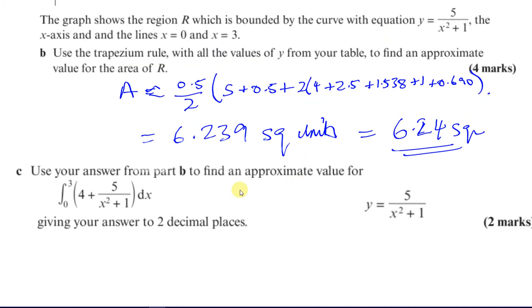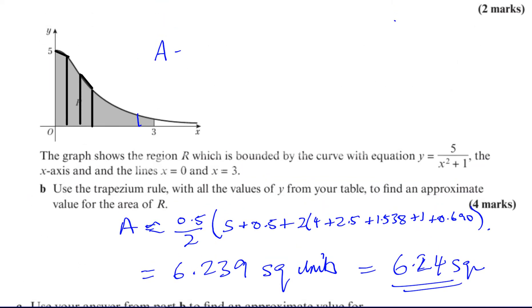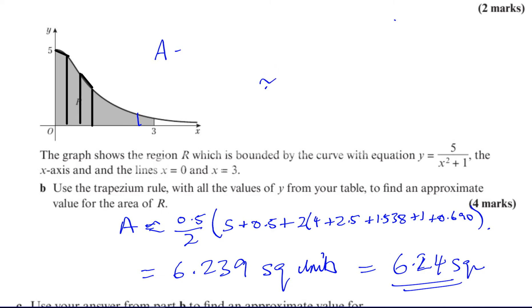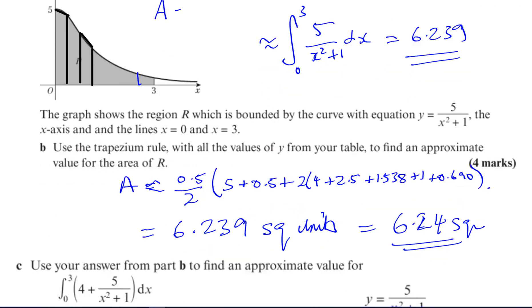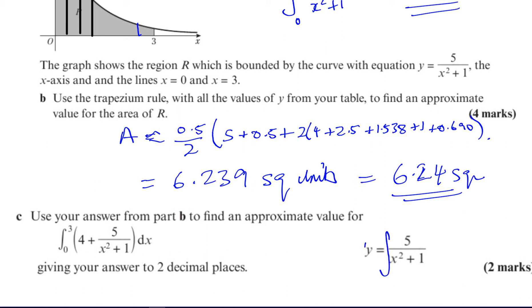Anyway, it says use your answer from part B to find an approximate value for the integral between 0 and 3 of 4 plus 5 over x squared plus 1 with respect to x. So now, see what we just did up here, we used this, we basically found an approximate value for the integral of 5 over x squared plus 1 with respect to x. We found an approximate value for this. The trapezium rule is basically giving us an approximate value for this between 0 and 3. So we found that that is 6.239. Okay, the more precise version of it. So we know what that approximate area for that is, but what we've been asked to do is to find, so what we know is, is that the area that we know between 0 and 3 with respect to x, integral of that, we have the approximate area, which is this area we found, 6.239.